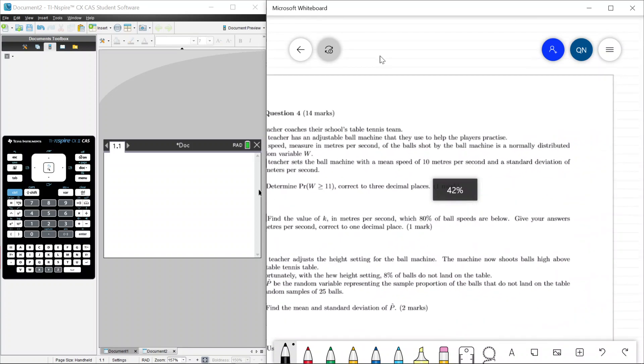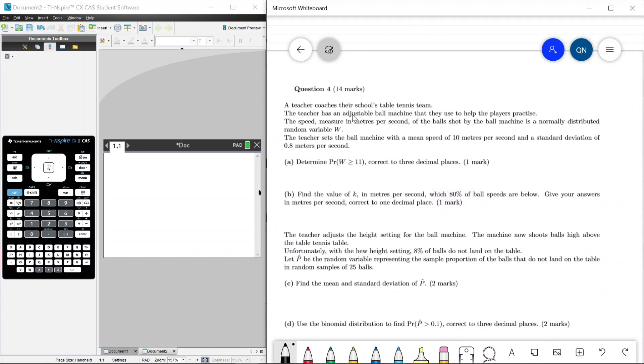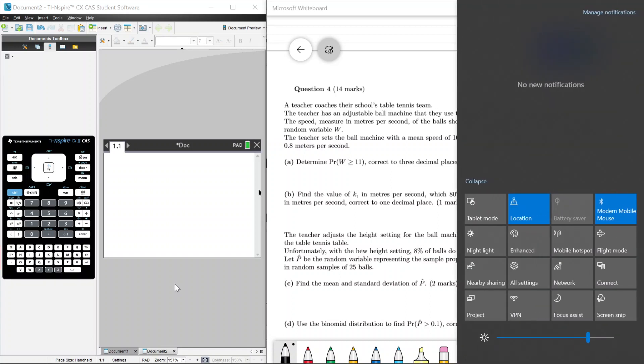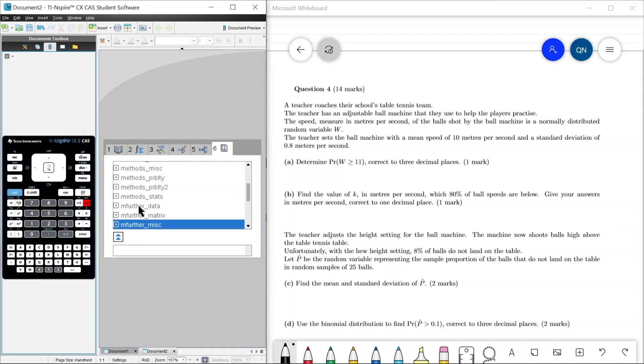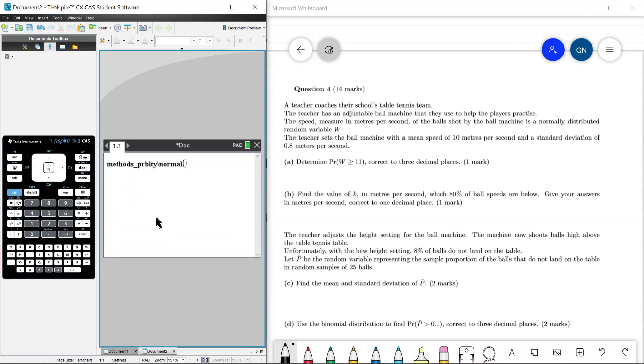So yeah, question 4 now. This is a probability question, and we can actually use some CAS programs for this one, which is really quite nice. Just quickly typed out the question, and let's just jump straight into it. We have a teacher coaches table tennis team. There's an adjustable ball machine that they use to help players practice.